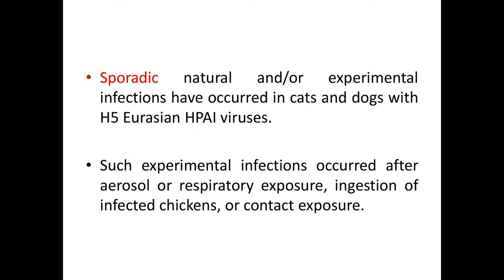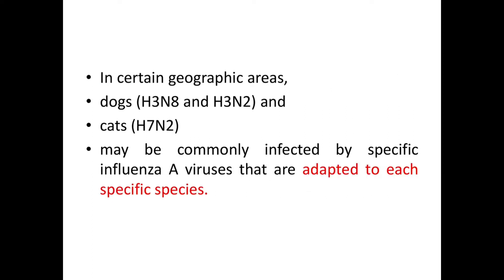Sporadic natural or experimental infections have occurred in cats and dogs with H5 Eurasian HPAI viruses, after aerosol or respiratory exposure, ingestion of infected chickens, or contact exposure. In certain geographic areas, dogs and cats may be commonly infected by specific avian influenza A viruses adapted to each species, such as H3N8 and H3N2 in dogs and H7N2 in cats.